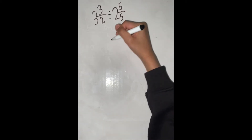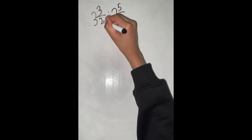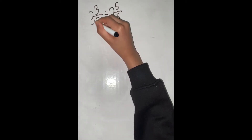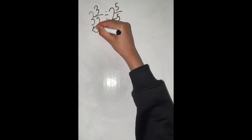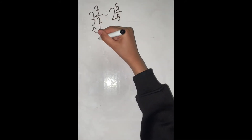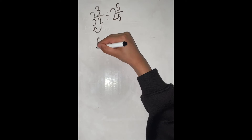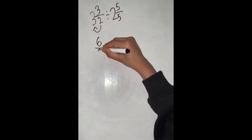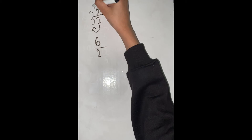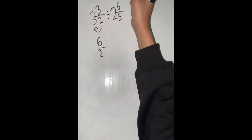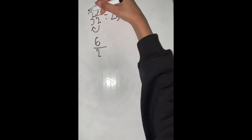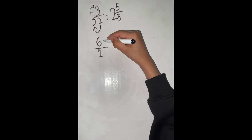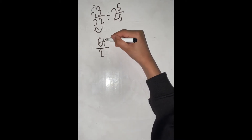So first, we are going to multiply the denominator and the whole number together. So 2 times 3 is 6, and then our denominator is still going to be 2. And then we are going to add the whole number and the numerator together, so we are just going to write plus 3.